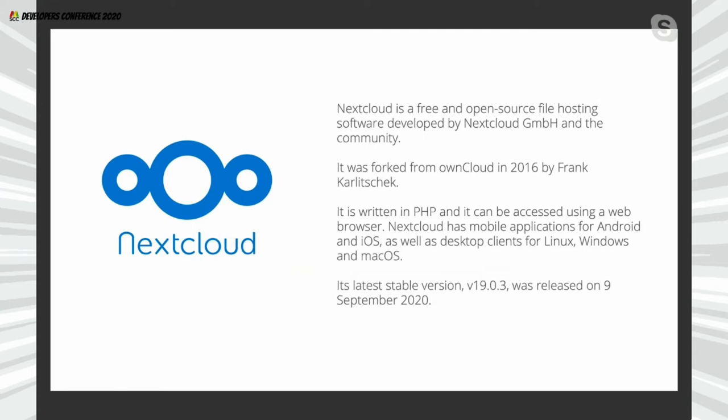The project is based in Germany but has contributors from around the world. It was forked from ownCloud, another open source software, in 2016 by Frank Karlitschek — the original developer of ownCloud. Due to disagreements with ownCloud, in 2016 he left the project, made a fork, and Nextcloud was born. When Frank left ownCloud, a lot of the core developers moved along with him.